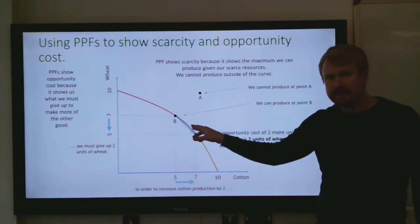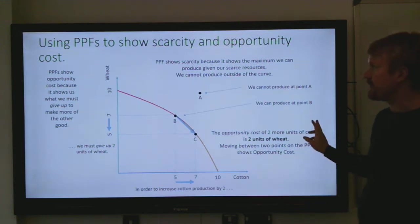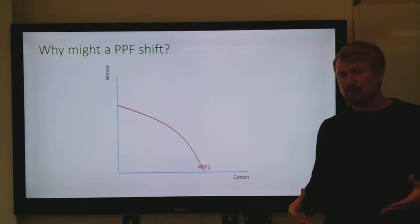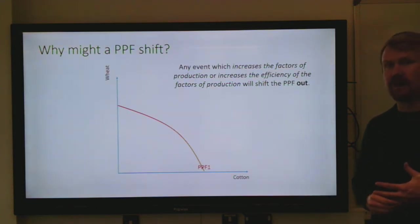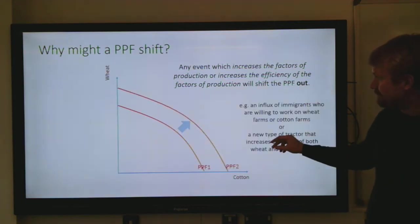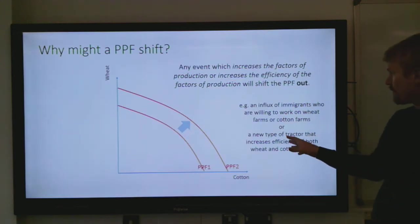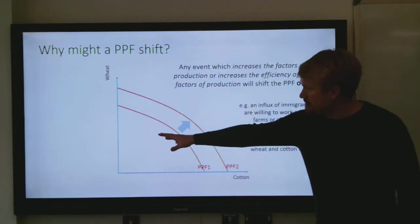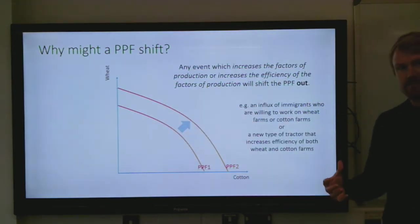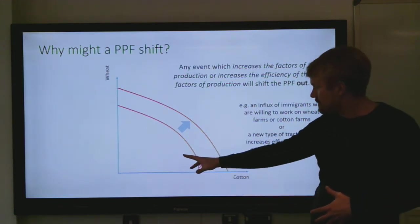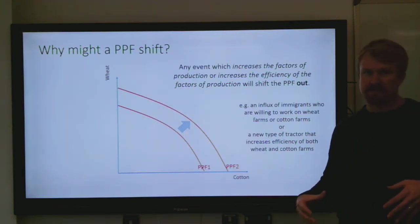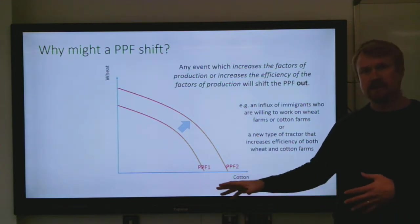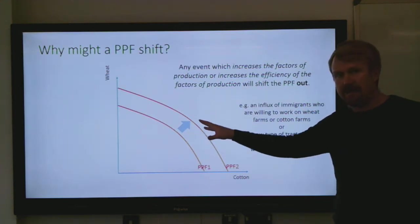Moving from point B to point C along the production possibility frontier shows that opportunity cost. The PPF will shift if you have an event which increases the factors of production or increases the efficiency of the factors of production — that will shift your PPF out. For example, if you had an influx of immigrants willing to work on both wheat farms or cotton farms, it pushes the maximum amount you can produce outward because you've got more of that factor of production known as labor, so you can produce more of either good.